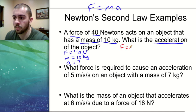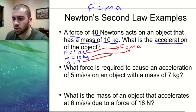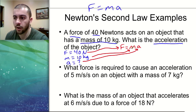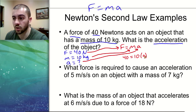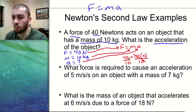We write the formula F equals MA and plug everything into the appropriate spots — force goes in the force spot, mass in the mass spot. So we have 40 equals 10 times acceleration. To solve, we isolate acceleration by dividing both sides by 10. The tens cancel out and our final acceleration is 4 meters per second squared. Make sure you're plugging each value into the proper variable spot in the equation.